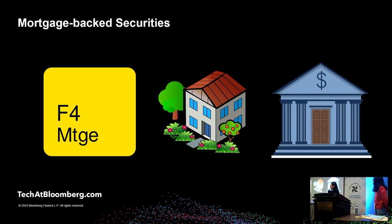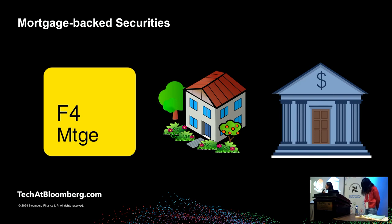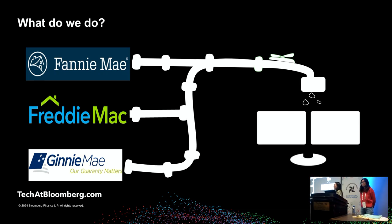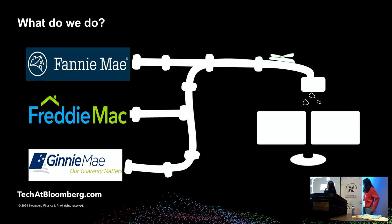We provide data on mortgage-backed securities. These can get complicated — at the bottom layer you have a stream of cash flow that makes up a single mortgage-backed security, but MBS can also redirect their cash flows into other MBS, forming a somewhat tall tree structure. The three agencies are Fannie Mae, Freddie Mac, and Ginnie Mae. Mortgages are paid monthly, and these agencies make their data available twice a month — on the fourth and sixth business day of the month, which we call BD4 and BD6.